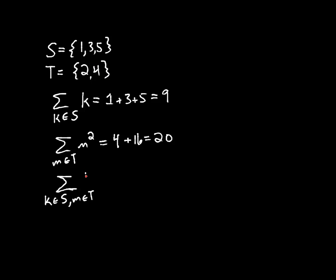And let's suppose I sum k times m. So that means I need to choose all the combinations of one element from S and one element from T. That could be 1, 2. That could be 1, 4. That could be 3, 2. That could be 3, 4. Or it could be 5, 2. Or 5, 4.